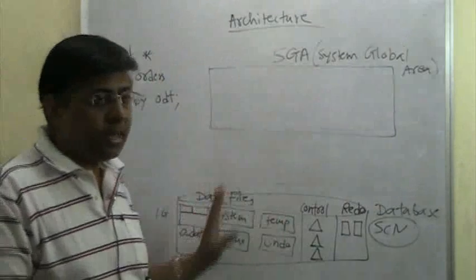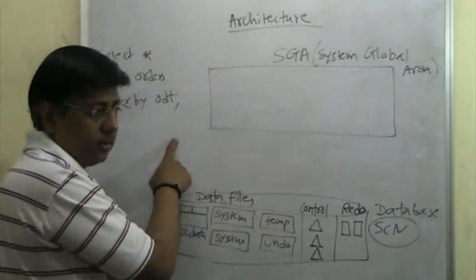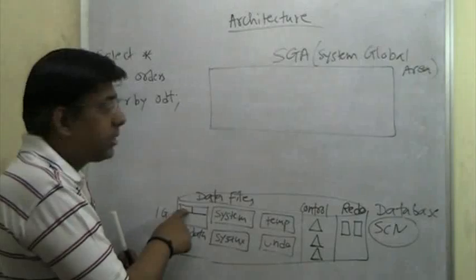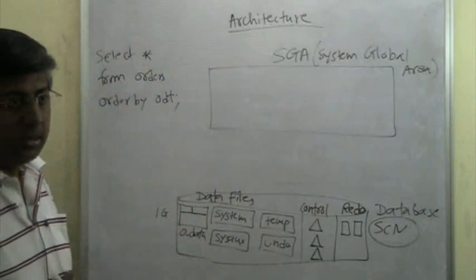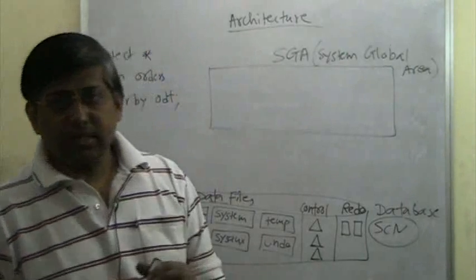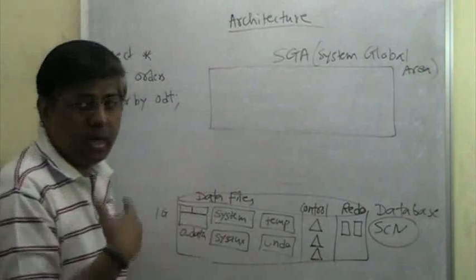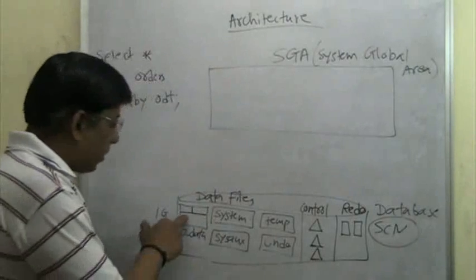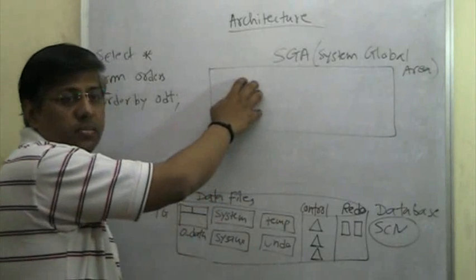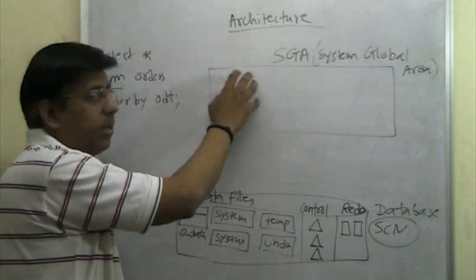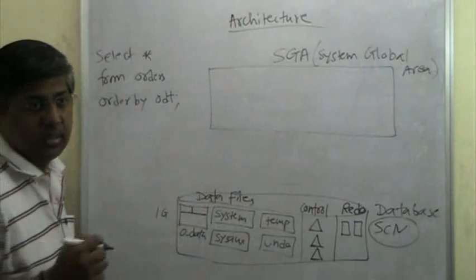The SGA acts as a middleman between the actual data sitting on the disk and the user. Every time a user requests certain data, the data is read from the disk and brought into the memory — the SGA — before it is given to the user. Oracle does this because accessing data from the disk is very time consuming since disks are mechanical instruments with RPM. Once data is read, it stays in memory for better performance.